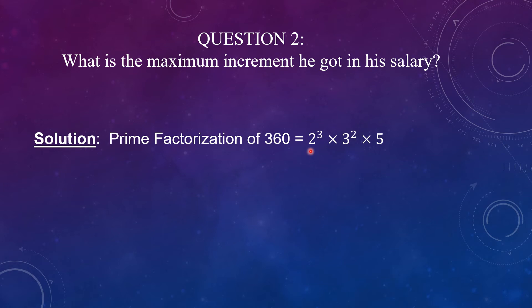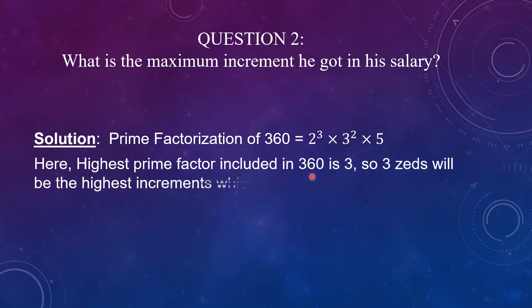We can see out of 2 and 3, 3 is greater. So, here highest prime factor included in 360 is 3. So, 3 zeds will be the highest increment which he received.